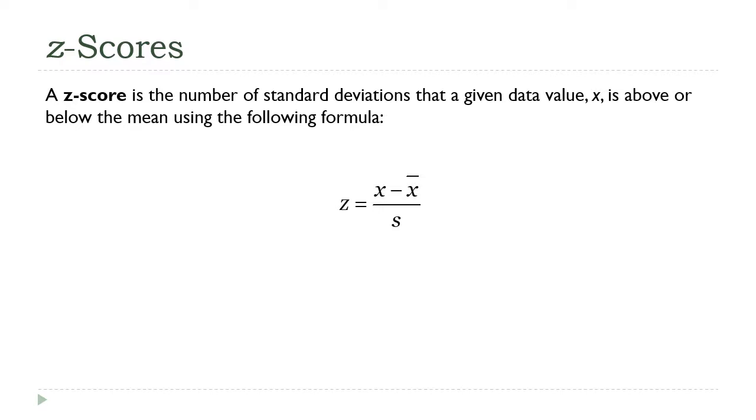You remember from our previous discussion, a z-score is a measure of how many standard deviations a data value is from the mean. You can see that in the calculation here. The way we calculate a z-score is we take x, which is our individual data value, and we subtract the mean from it.